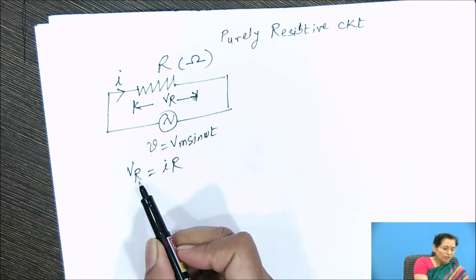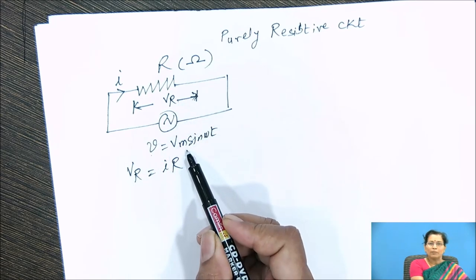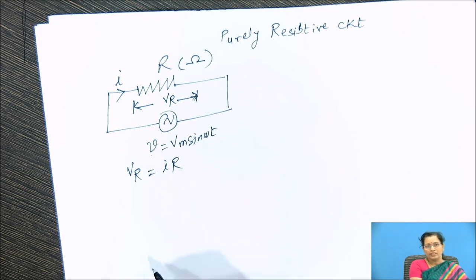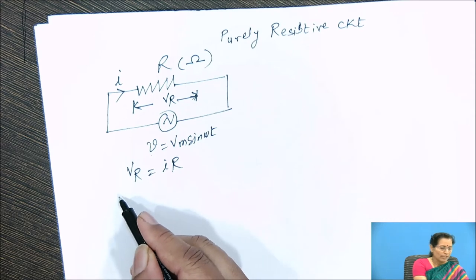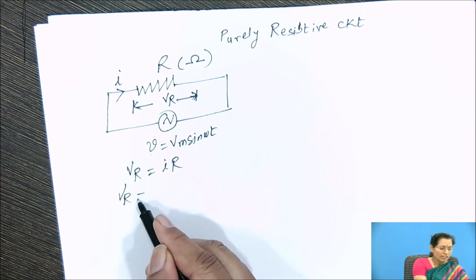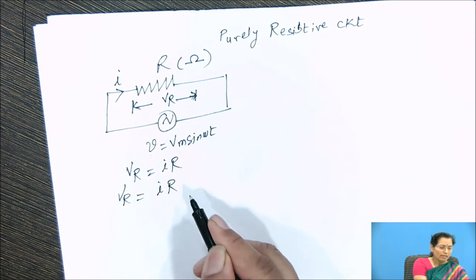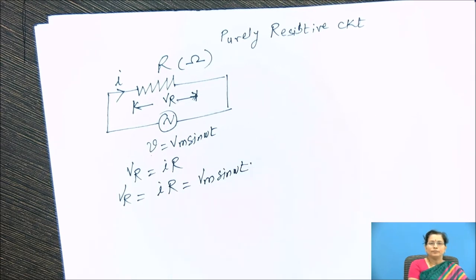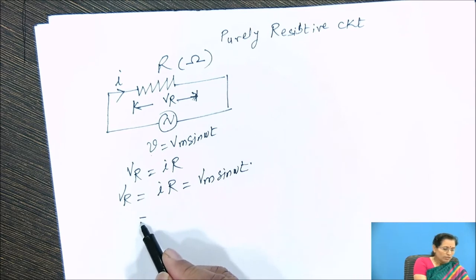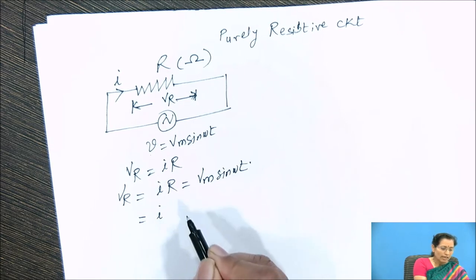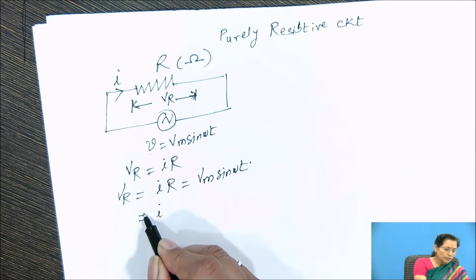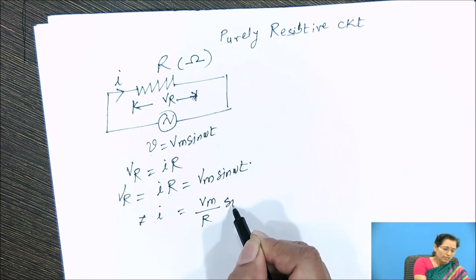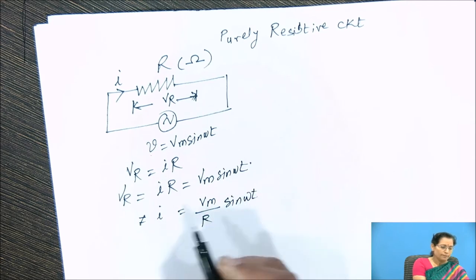This Vr is the same as the applied voltage, that is Vm sine omega t. So we can write down this equation as Vr equal to Vm by R into sine omega t.